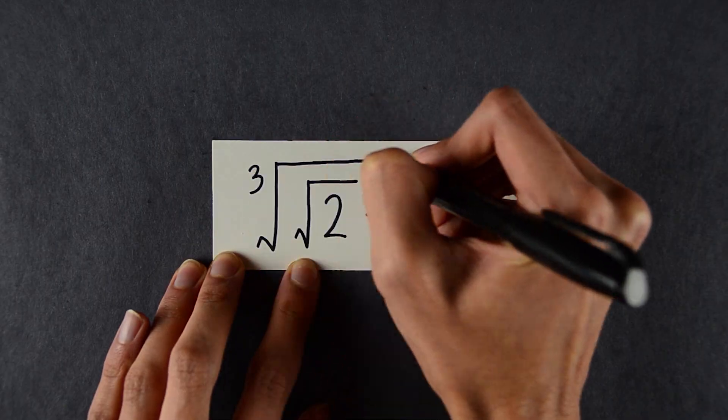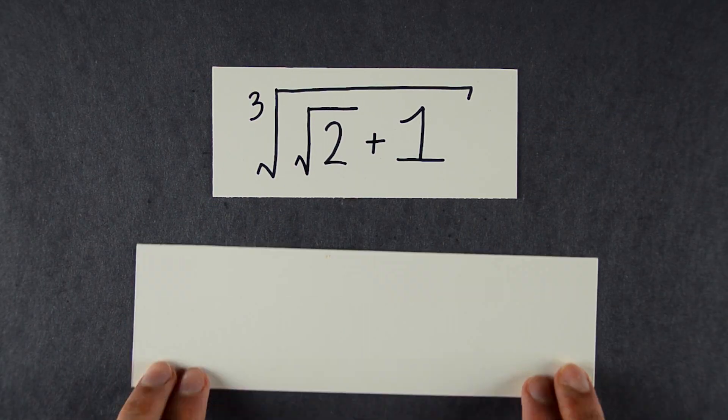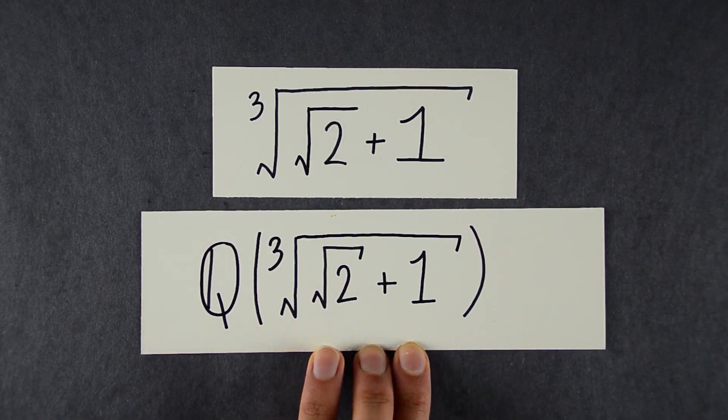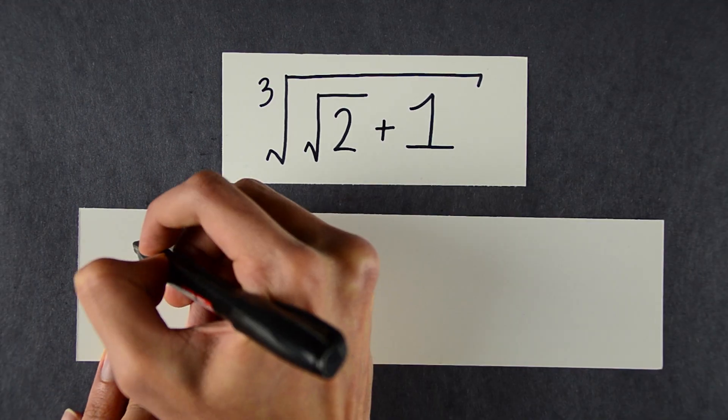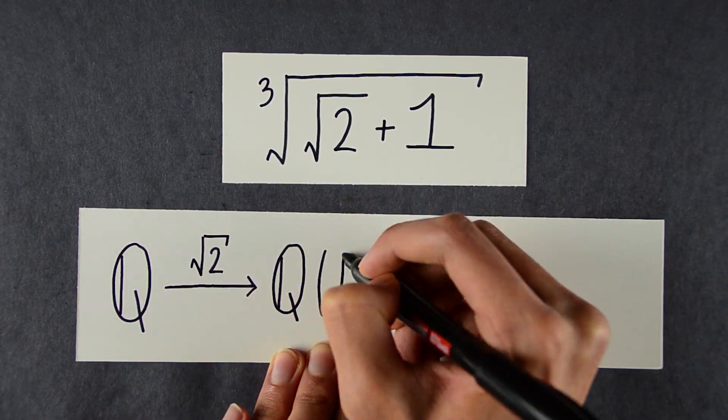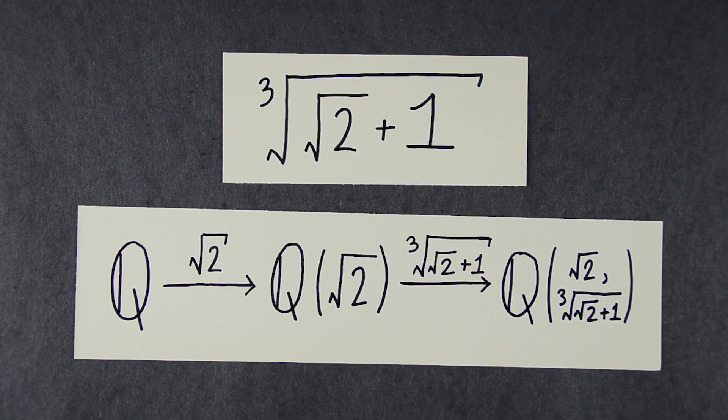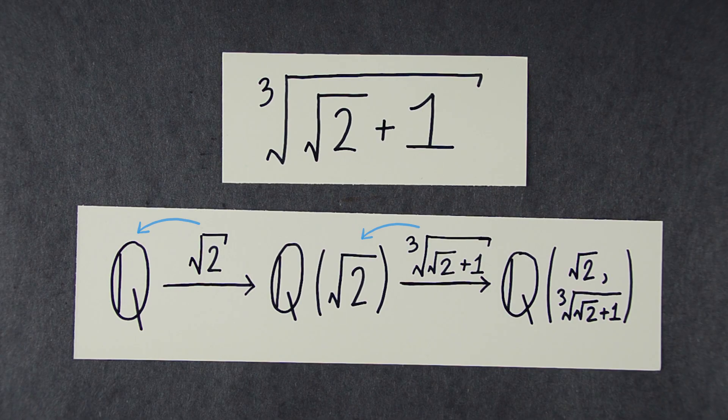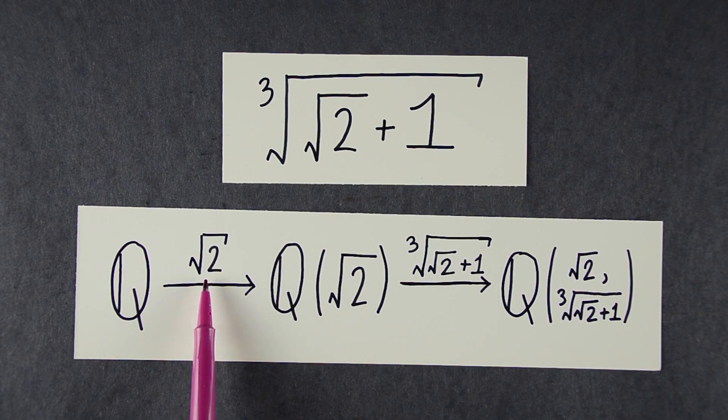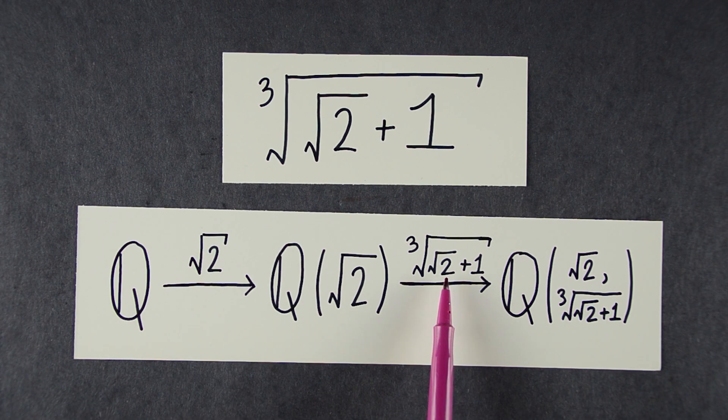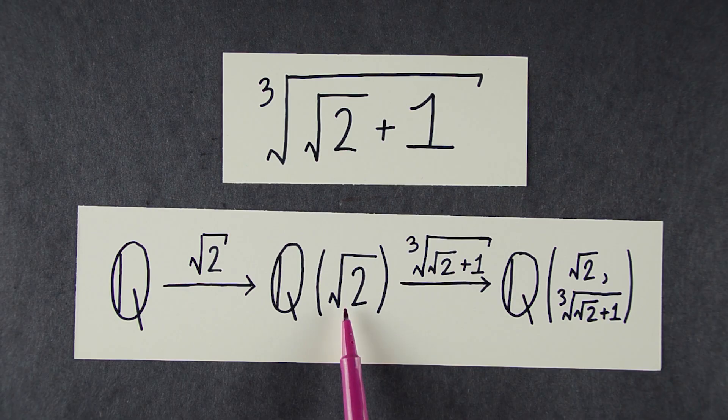What if you wanted to take nested roots, like the square root of 2 plus 1 cube root it? Well, the easiest way to do it would be take Q and then adjoin that number in. But in this video, we're not going to take that root. Instead, we'll first adjoin the square root of 2. Then we'll adjoin the cube root of the square root of 2 plus 1. The key point is that at each step, we only adjoined a root of something that lives in the previous field.